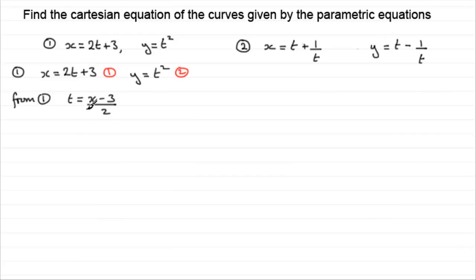And with this equation, I can substitute t in terms of x into 2. So, again, I would say that, I'd just say sub into 2. And what would I get? Well, we'd have y equals t squared, which is going to be x minus 3 all squared over 2 squared. So, we have x minus 3 all squared over 2 squared, which we might as well write as 4. And I'd leave it like that. That's fine for our Cartesian equation.